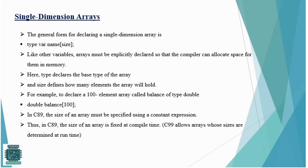The next concept is the single dimensional array, also called a 1D array. The syntax for a single dimensional array is: type, variable_name, and size. 'Type' is the basic data type — it can be int, float, double, or any other type. 'Variable name' is any name you assign, like 'balance'. 'Size' is how many elements the array can hold. For example, 'double balance[100]' means the balance array can hold up to 100 elements.